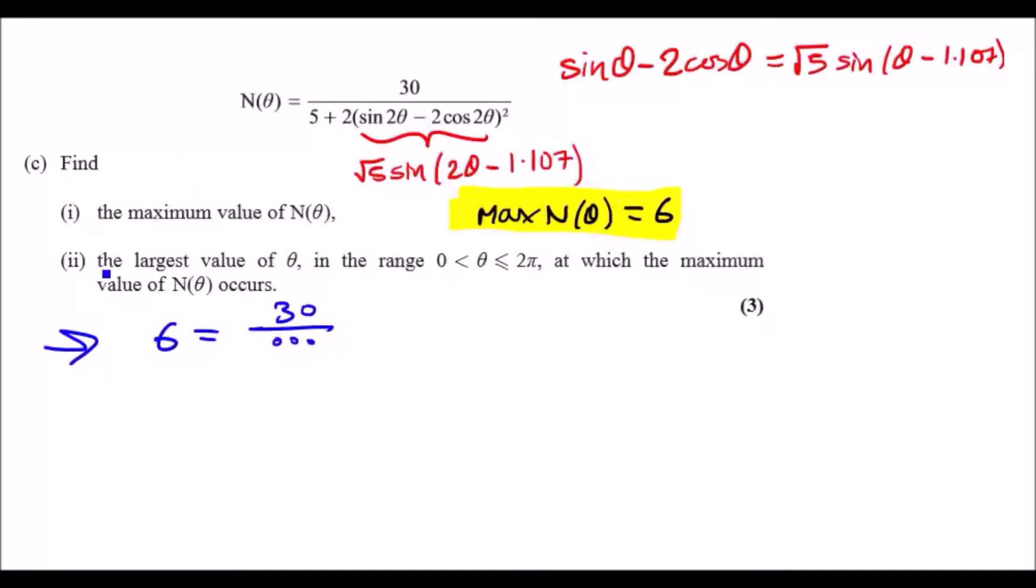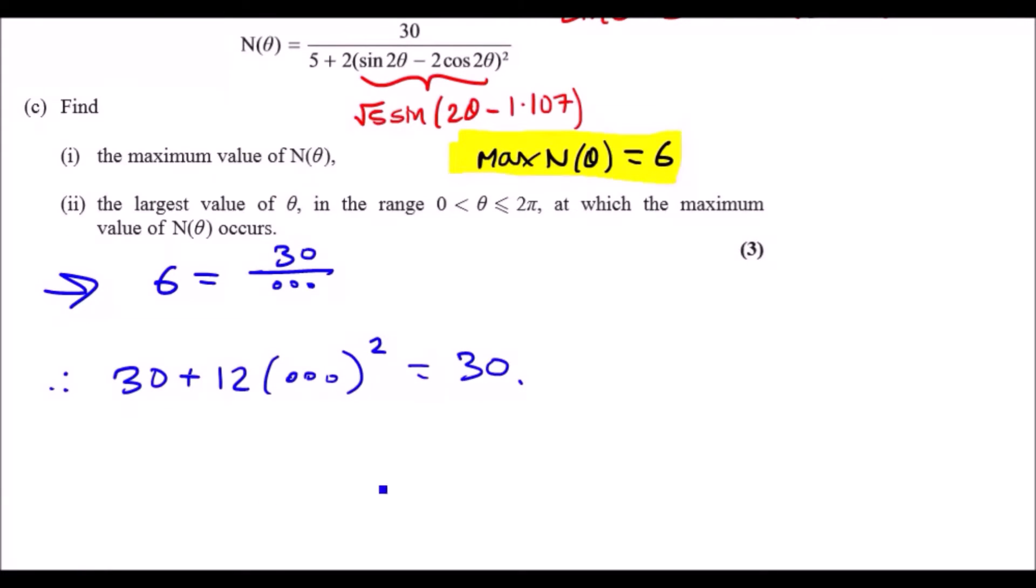So all you have to do guys is just simply rearrange. So let's multiply the denominator across to the left side. So you're going to get 6 times all that, so 30 plus 12, instead of sine I'm gonna put the root 5 sine there, so I'll just do the dots squared, must equal the right hand side which is 30.